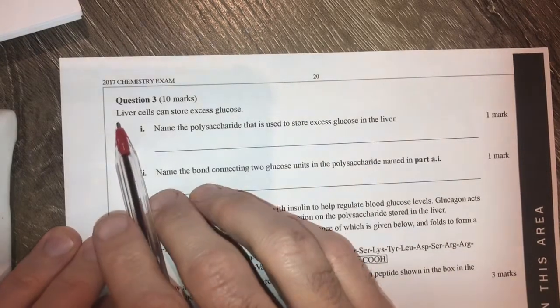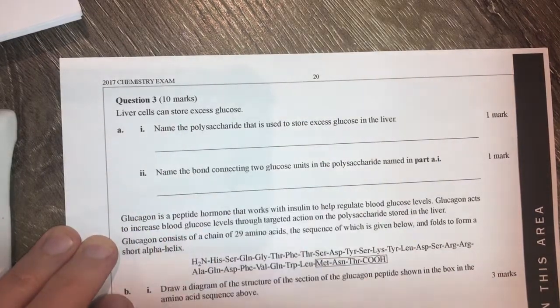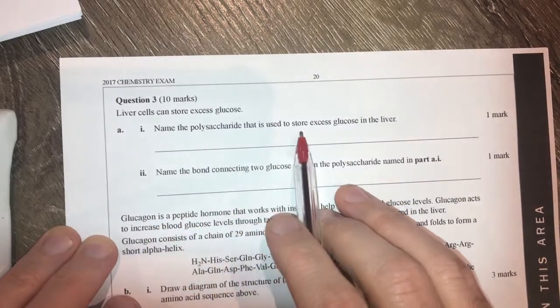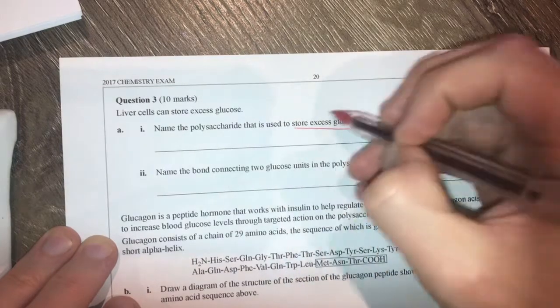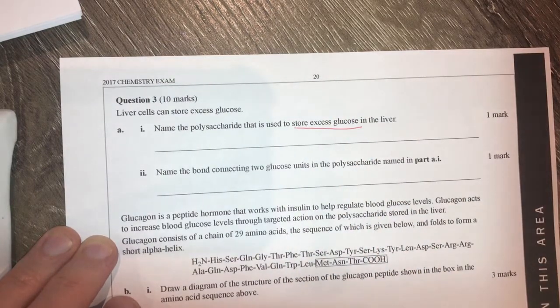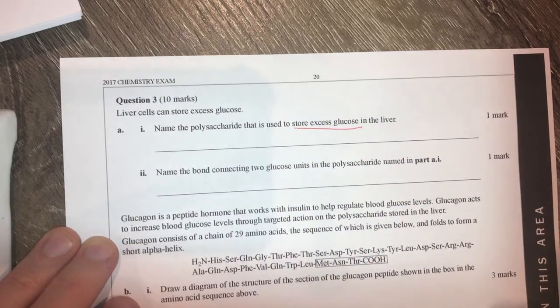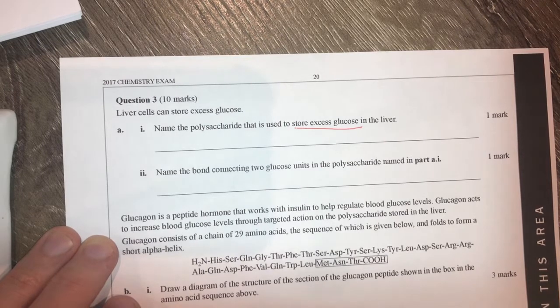Question 3. Liver cells can store excess glucose. Name the polysaccharide that is used to store excess glucose in the liver. Alright, stores of excess glucose - two of those. We have starch, which happens in plants, and glycogen, which happens in animals.